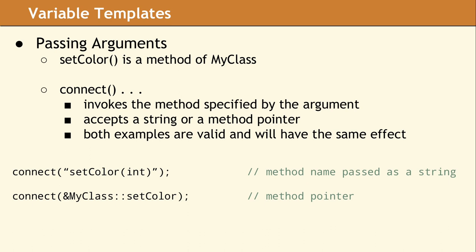The syntax to pass a method pointer involves applying an ampersand prefix to the class name, followed by two colons and then the name of the method. The data types for any arguments in setColor are not part of the method pointer.